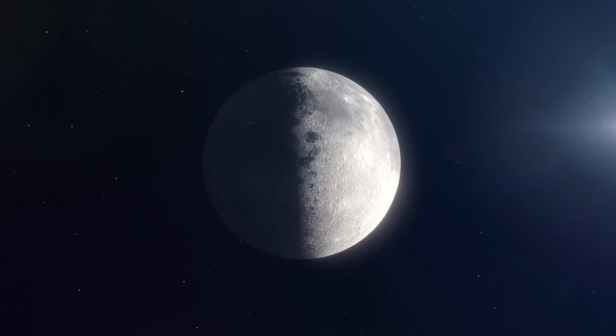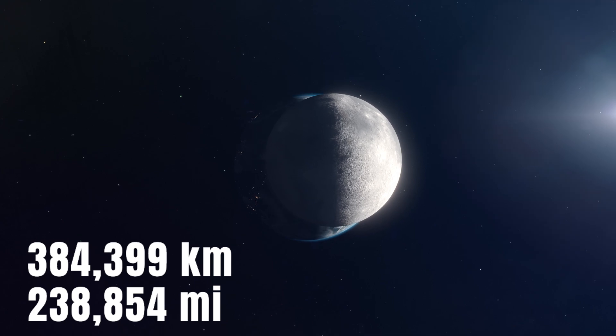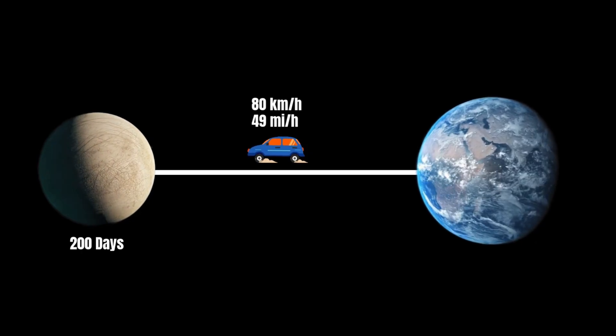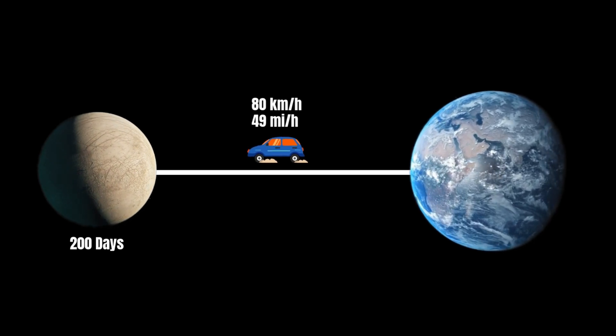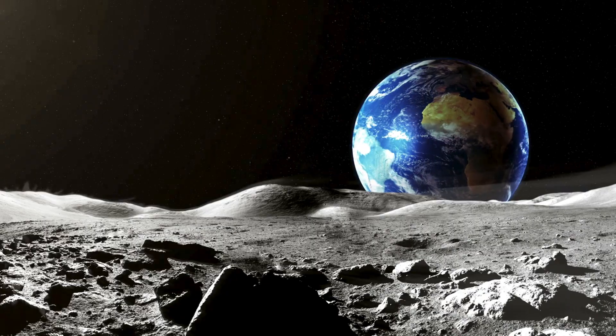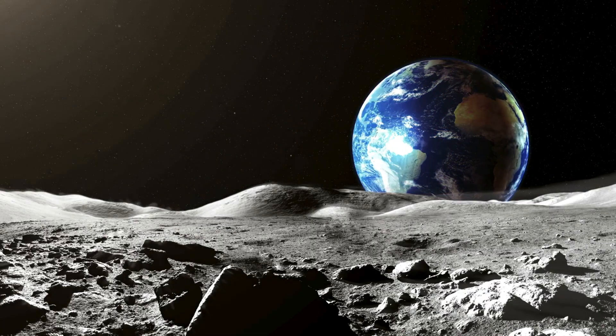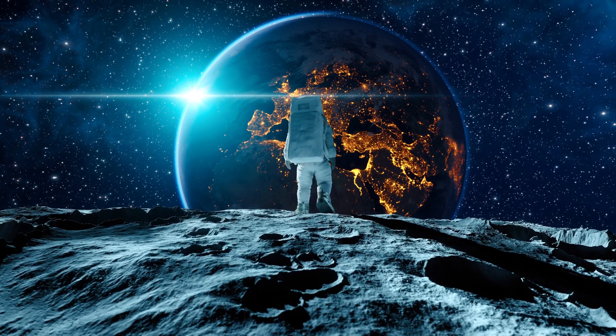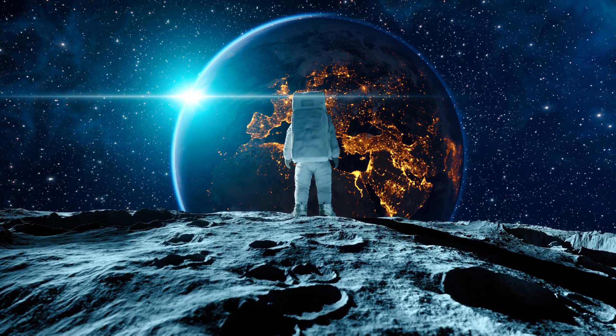The first milestone is the moon, sitting 384,000 kilometers away. To put this in perspective, driving nonstop at 80 kilometers per hour would take more than 200 days to reach it. From this distant vantage point, Earth appears as a delicate sphere of blue and green, suspended in the black void of space, a humbling sight that shifts our understanding of home.